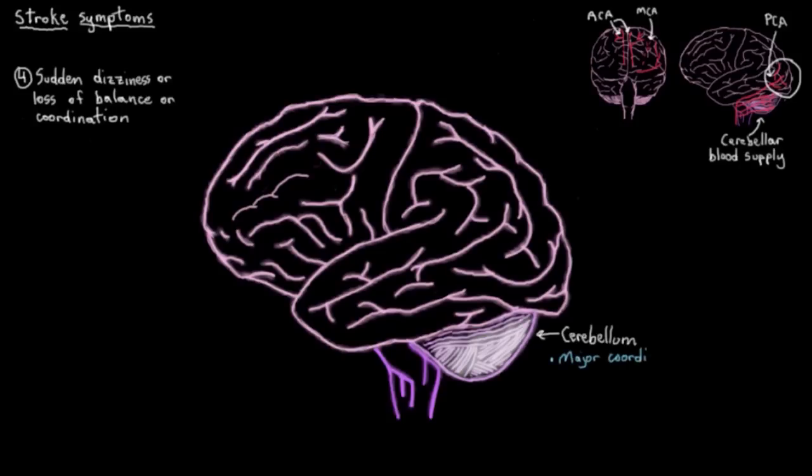Well, because the cerebellum is the major coordinator of our movements. If something happens to it, we start to get imprecise and uncoordinated. And we end up having poor timing to our movements.